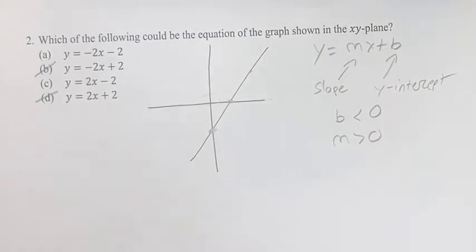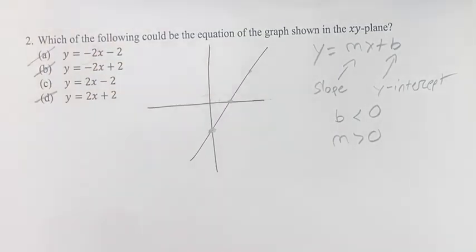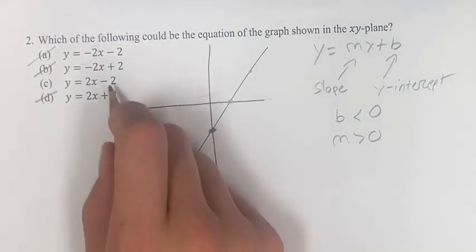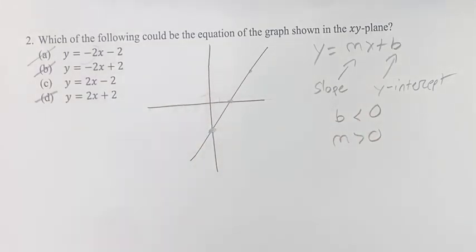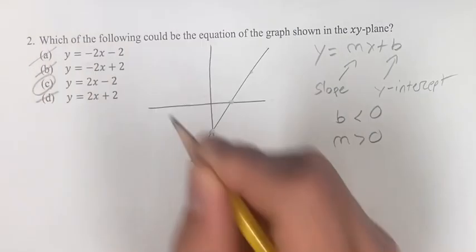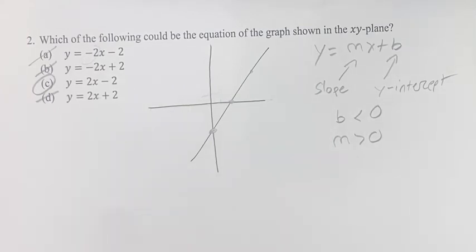What does that mean for our options? That means negative two cannot be the slope, that's going to be cut out. Two could be the slope. Again, negative two could be the y-intercept, and that's the only option, so it must be. So c is going to be your answer. As always, thank you for liking and subscribing, and I'll see you in the next video.